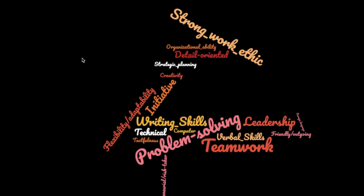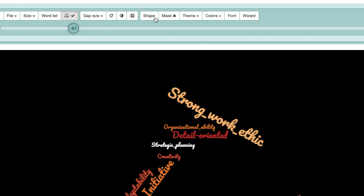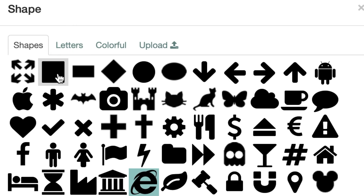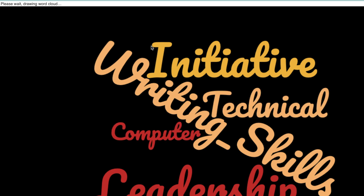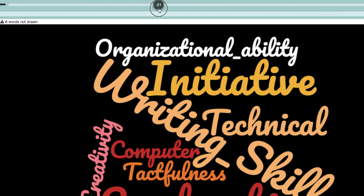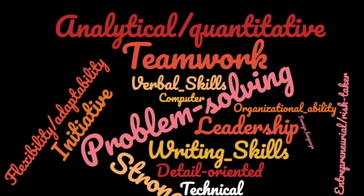But the word cloud still looks a little random, so I'll go up to the shape button and see what other possibilities exist. You can experiment with the different alternatives, but I'm going to use a box to concentrate all the information into one area. I'm missing some words, so a quick move of the slider to the left will recover the eight missing words.